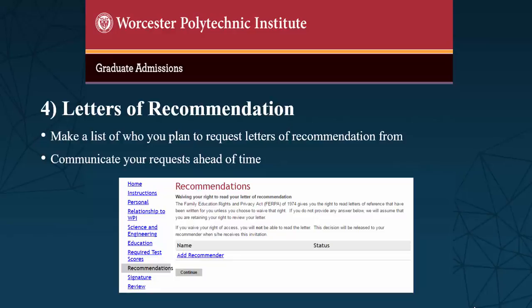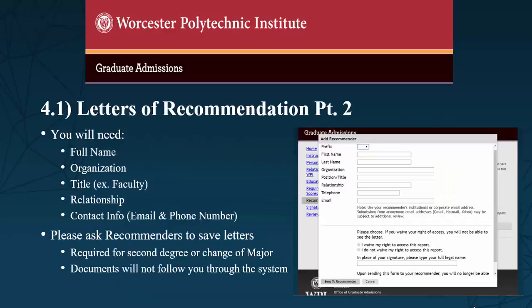It is a good idea to get in touch with the people that you request letters from ahead of time, so that they will expect to receive the request and don't think that it is junk mail. Please also ask them to submit the letter through the system — they should not mail a hard copy. You will need to collect their name, organization, title, relationship, email, and phone number. The people that are writing the letter should also save a copy of your letter, in case you decide to pursue a second degree or change your major. The letters of recommendation are the one set of documents that will not follow you through the system.